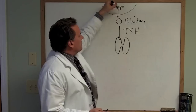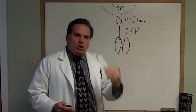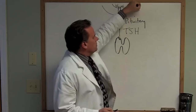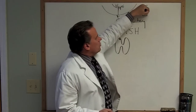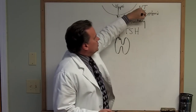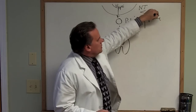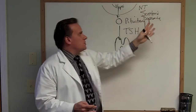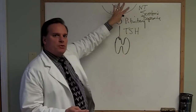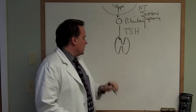Up in the hypothalamus, the control over the pituitary is regulated by two neurotransmitters called serotonin and dopamine. So there are neurotransmitters that regulate how the pituitary is going to be controlled, which in turn regulates how the thyroid is going to be controlled.